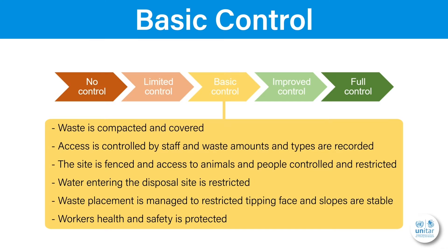Here are some aspects of basic control: waste is compacted and covered, and for this some compaction equipment should be available. Access is controlled and restricted, where waste entering is weighed and recorded. The site is staffed, fenced, and the access of animals and people is controlled and restricted. Finally, workers' health and safety are protected.